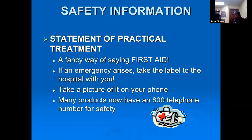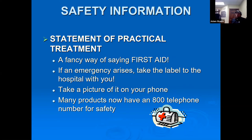Right near the front of the label will be the first aid safety information telling you what to do should an emergency arise. Pro tip: if you're using any pesticides, have the label handy or take a picture of it on your phone. If something happens and you need to go to the hospital, the EPA registration number on the label tells doctors the formulation of the chemical so they know how to treat it.